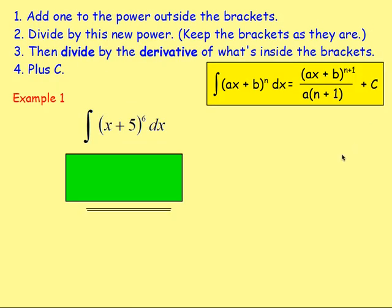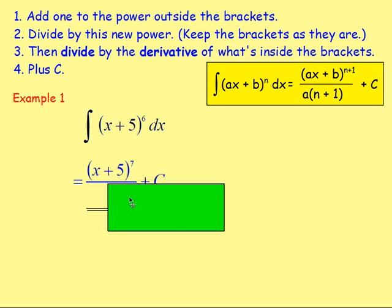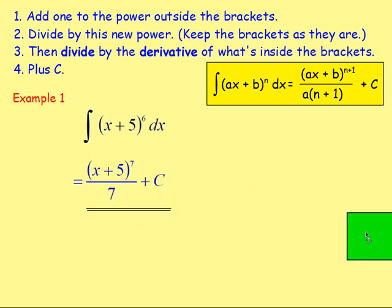Example 1: Integrate (x + 5)^6. Following these steps, you add 1 to the power, giving (x + 5)^7. You then divide by this new power, so dividing by 7. You also divide by the derivative of what's inside the brackets — if you differentiate x + 5, you get 1. So you divide by 1, which means 1 times 7 is just 7. So the answer is (x + 5)^7 over 7, plus c.